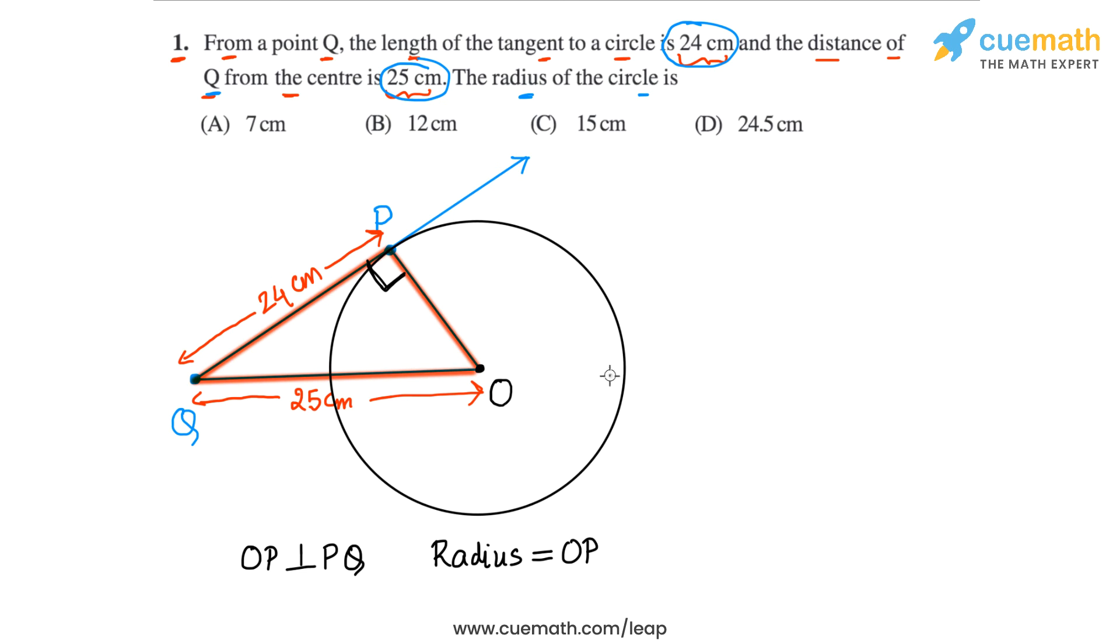So let's apply the Pythagoras theorem and simply find the length of OP, and that will be our answer. So OP square will be OQ square. OQ is the hypotenuse, so OQ square minus PQ square. So PQ is the other side.